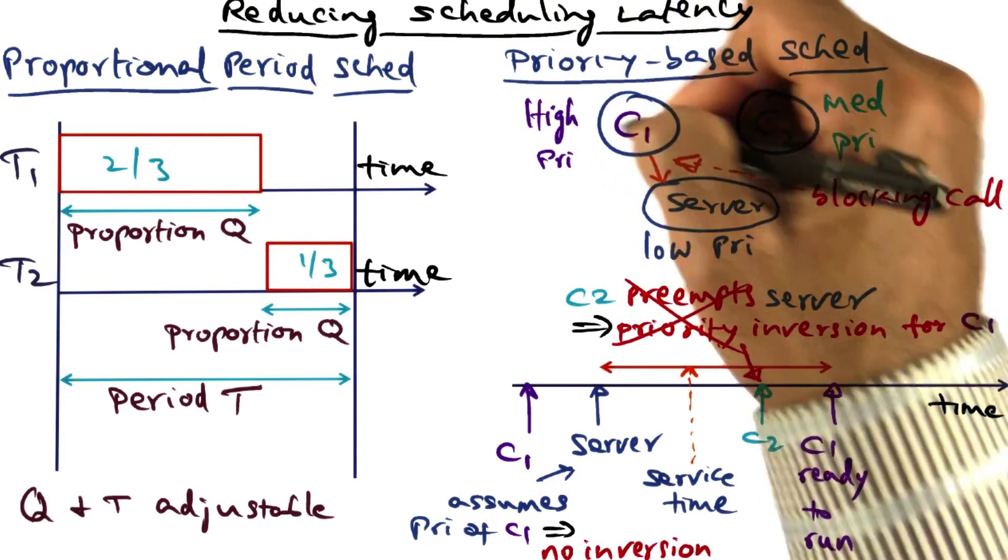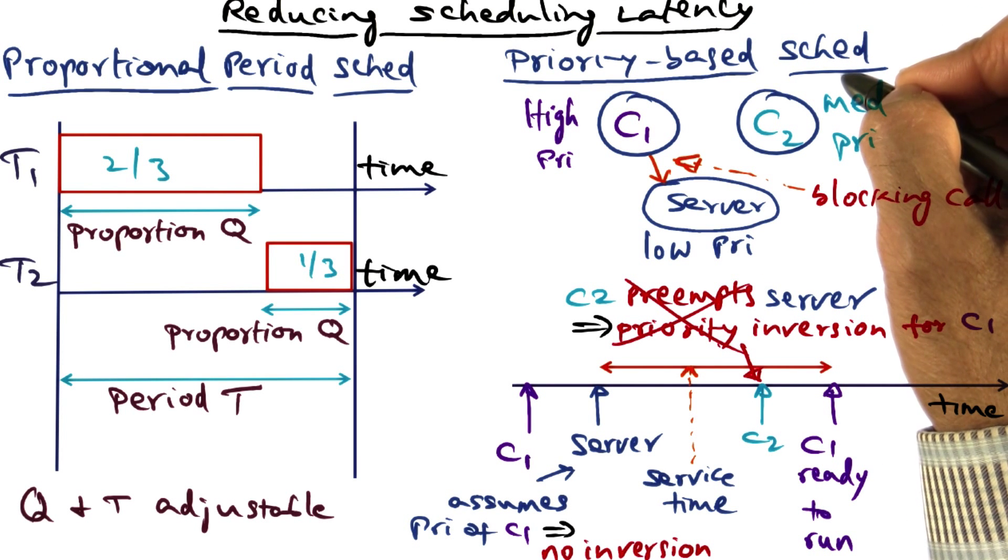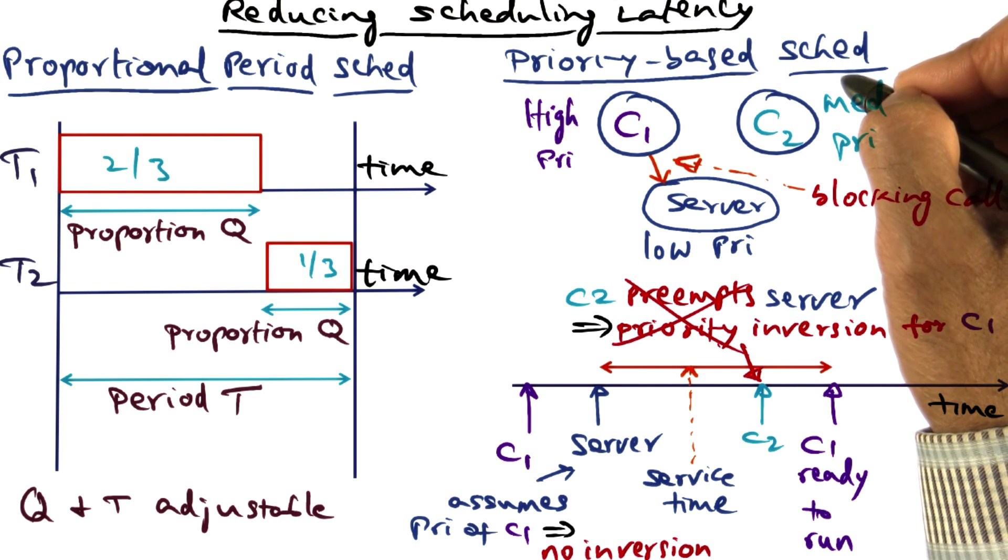and also it avoids priority inversion by using this priority-based scheduling. So these two mechanisms allow shrinking that distance as well.